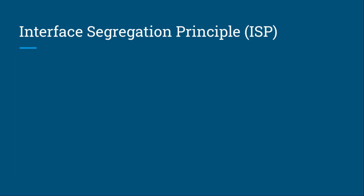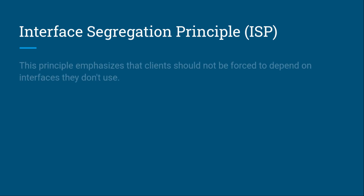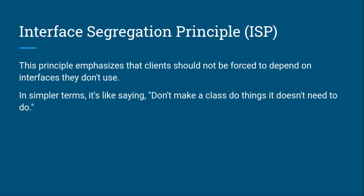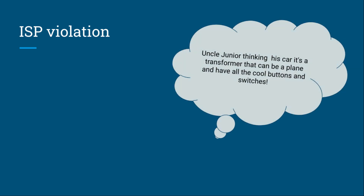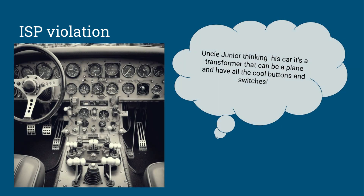Now let's look at the Interface Segregation Principle. This principle emphasizes that clients should not be forced to depend on interfaces they don't use. In simpler terms, don't make a class do things it doesn't need to do. Uncle Junior's car is like a transformer that can be a plane, with all the cool buttons and switches — the dashboard is full of things you're not going to use, which is confusing and creates a mess in your code.